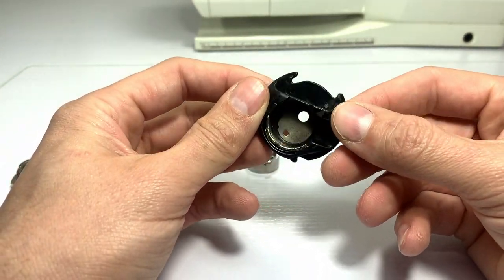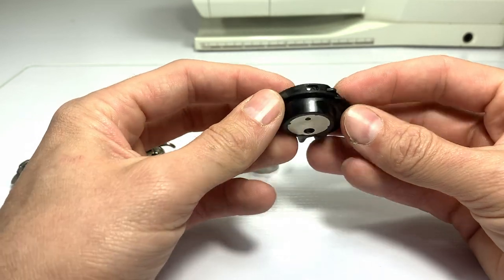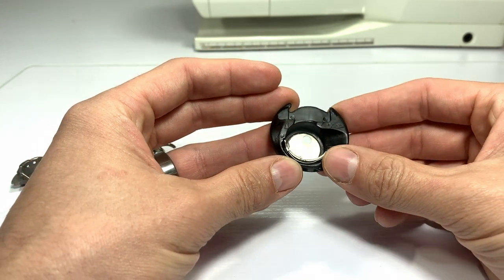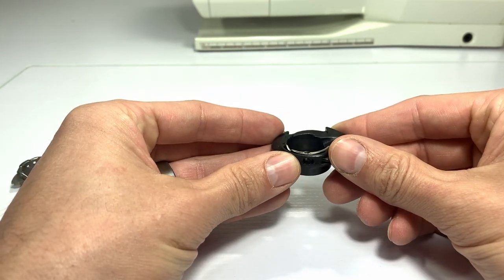This is currently the most popular style of bobbin case, which is a drop-in rotary bobbin case. What that means is the bobbin case sets inside the machine and the hook spins on the outside of it.